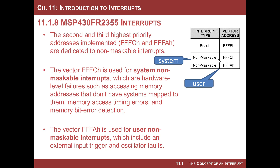The next two vector addresses are associated with non-maskable interrupts, reserved for hardware problems. They are non-maskable — you cannot turn them off; they are always enabled. The first one at FFFC is for system interrupts: hardware-level failures like memory access errors, timing errors, or bit error correction code mistakes. These give you a chance to try to repair the situation without a full reset — your ISR could attempt to correct the problem and recover before giving up.